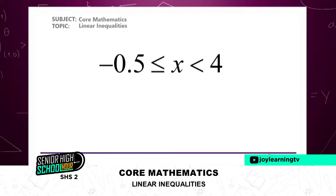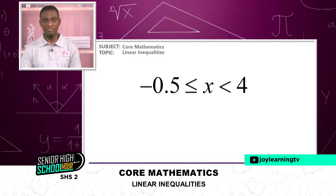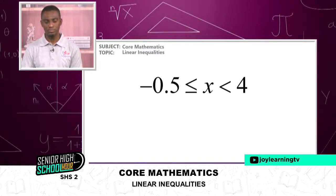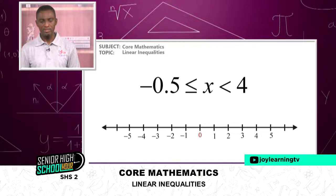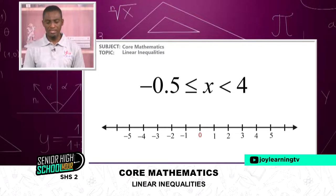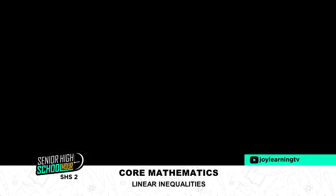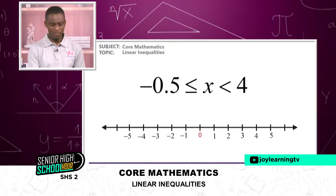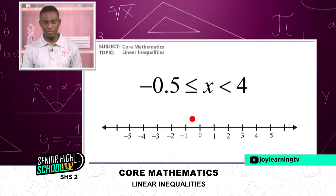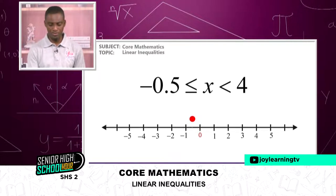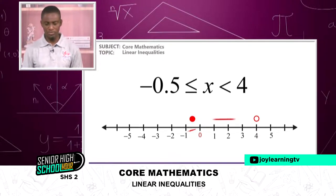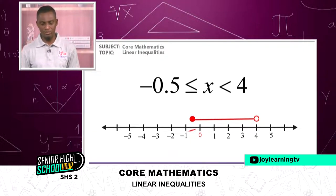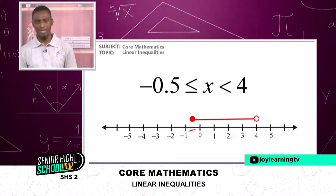For the practice example with −0.5 ≤ x < 4: negative 0.5 lies between 0 and −1 on the number line. Place a shaded pointer at −0.5 (inclusive) and an open pointer at 4 (not inclusive), then join the two points to represent all values of x between −0.5 and 4.